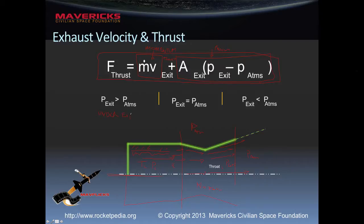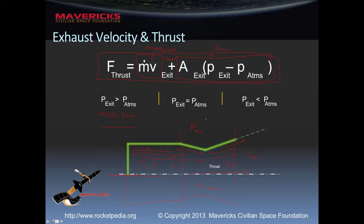If we could make this nozzle just right — just big enough for our external atmospheric pressure — then it would be properly expanded. If it's properly expanded, the difference between the exit pressure and the atmospheric pressure is zero, which means the pressure thrust is zero. At that point, we will have successfully converted as much of our pressure — our potential energy from the combustion chamber — into momentum thrust. We've basically got maximum velocity of the particles leaving out of the end of the rocket. That's the ideal case.